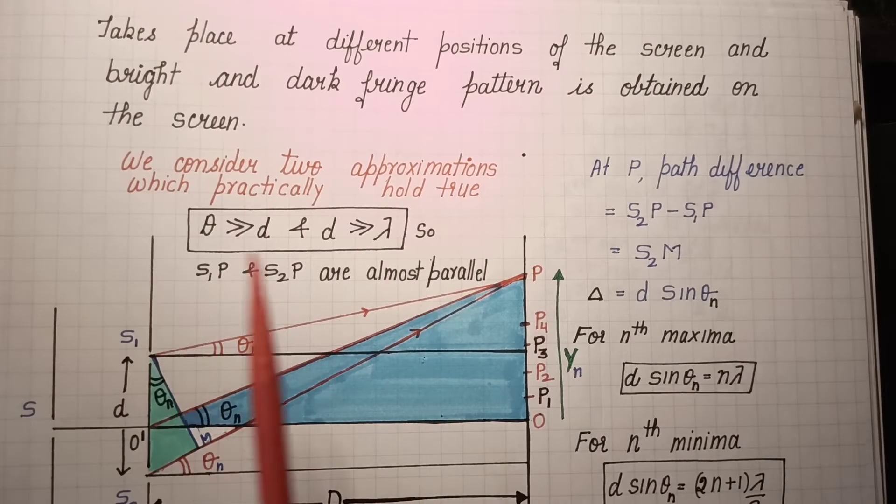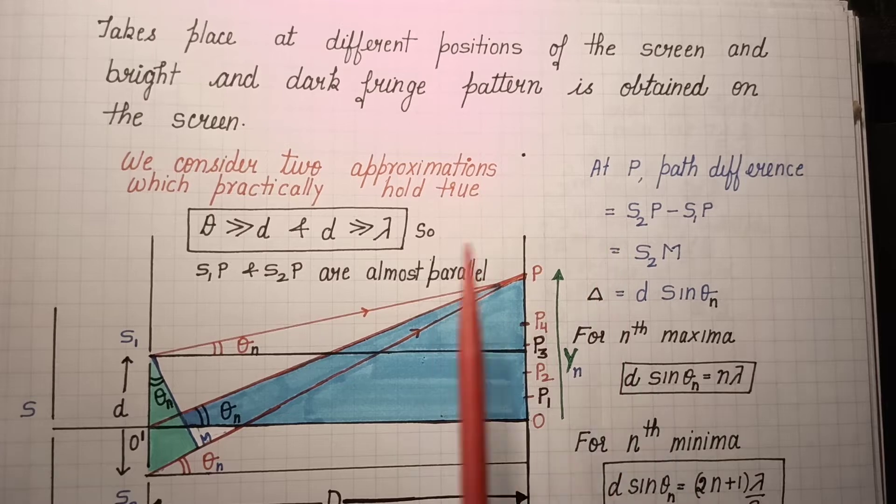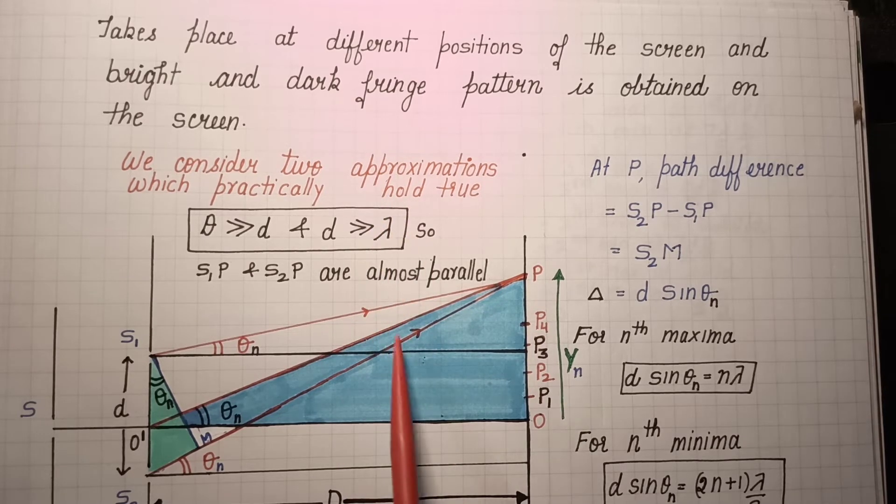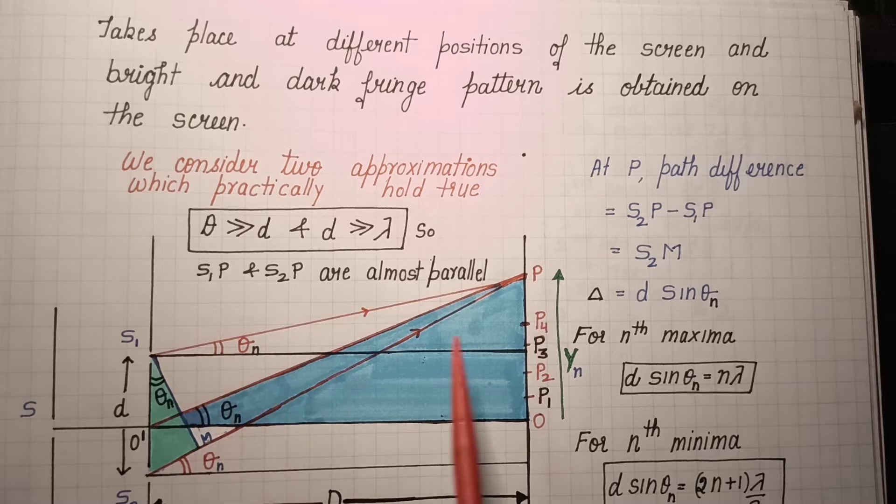I will be giving all the necessary links, video links as well as PDF links in description, so that after knowing which derivations are very important you can go through the explanation of the answers also. This is the derivation of fringe width expression in Young's double slit experiment.